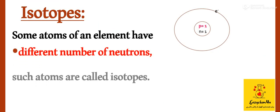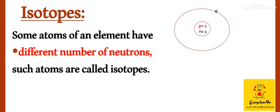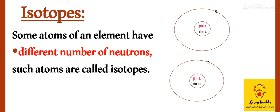Protons will always be the same for all atoms of an element, but neutrons can be different. Some atoms of an element have different numbers of neutrons — such atoms are called isotopes. Just as we have seen with hydrogen, there are different isotopes; we will discuss this topic in detail in coming lectures. For this hydrogen atom, one has one neutron and the other has zero neutrons — these two are isotopes of each other.